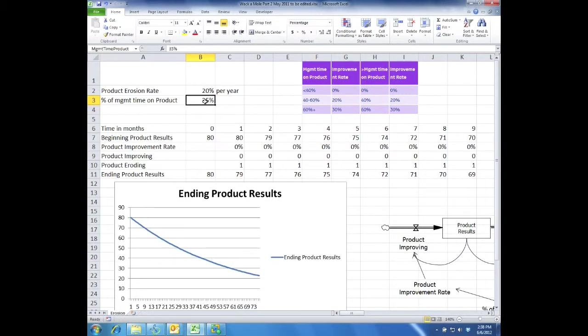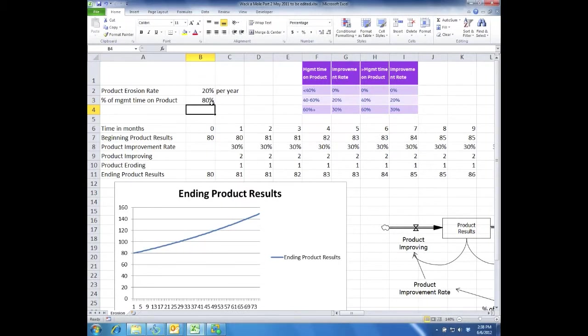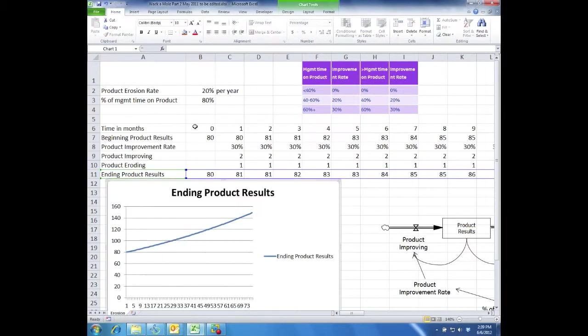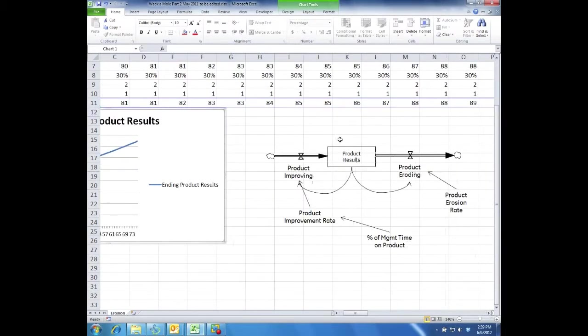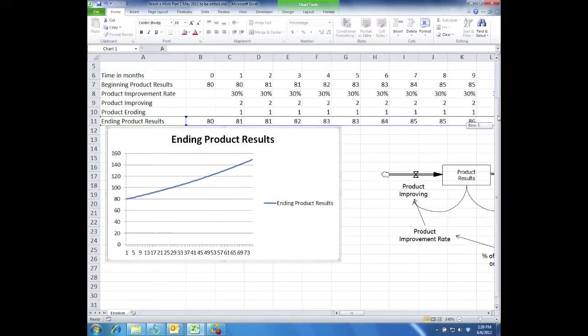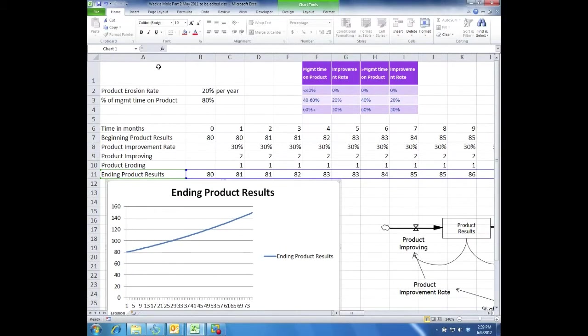It erodes at 20% a year so it declines like we saw in the last video. And then if you spend let's say 80% of your time on the product it will improve because you're improving at 30%. You're eroding at 20% so you're basically improving more than you're eroding so the results will go up which you can see they do. So that's where we are in the modeling process. We have one of the balancing loops basically almost done. And I'll go to the board and just recap and then we'll need at least one more video to finish whack-a-mole.